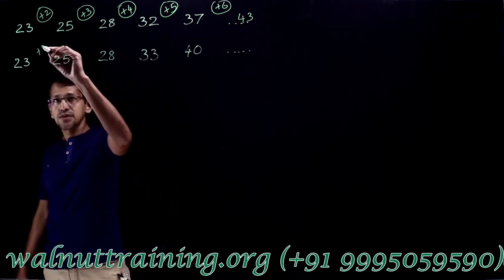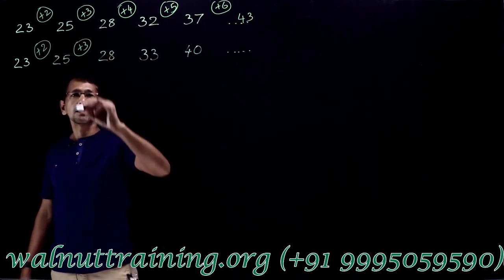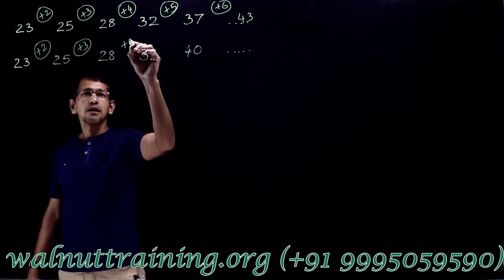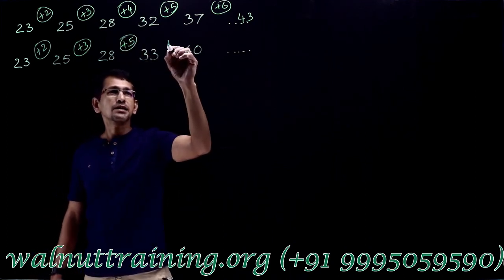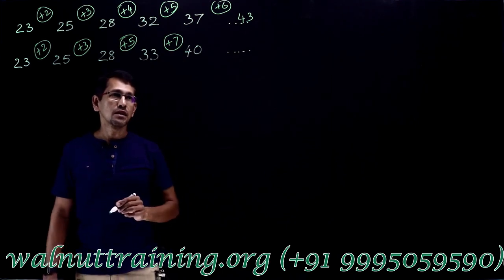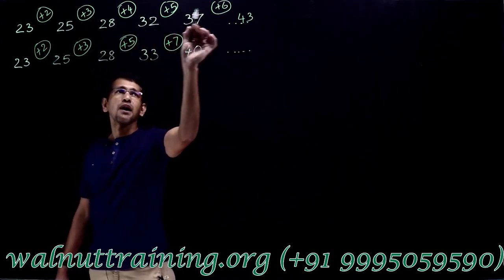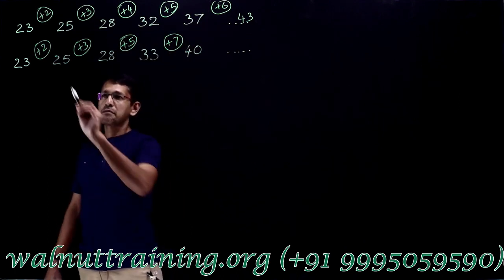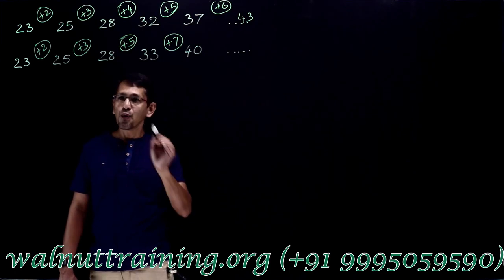23 plus 2 is 25, and 25 plus 3 is 28. 28 plus 5, that is 33. 33 plus 7, that is 40. In this case, it was plus 2, plus 3, plus 4, plus 5, plus 6. But in this case, it is plus 2, plus 3, plus 5, plus 7. What are those numbers?